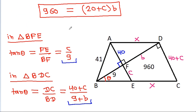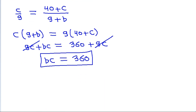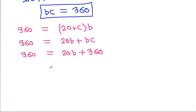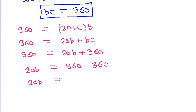We have 960 equal to 20 plus C times B, and BC is 360. So 960 equals 20B plus BC, which is 20B plus 360. Therefore 20B equals 960 minus 360, so 20B equals 600, and B will be equal to 30.